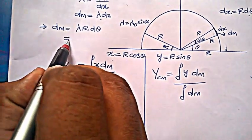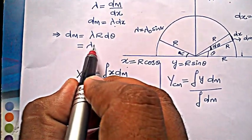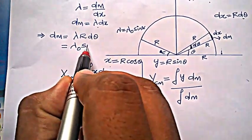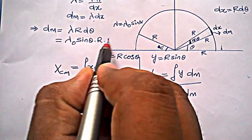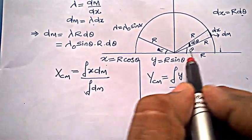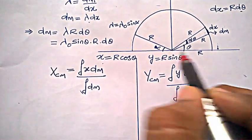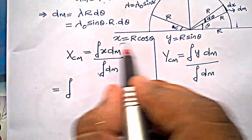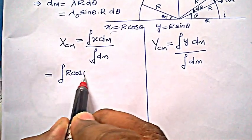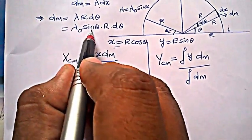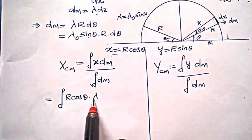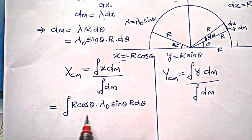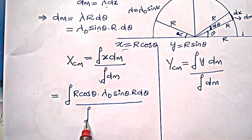Now, dm = λ₀ sin(θ) · r dθ, since I have chosen the angle θ. The limits of θ are from 0 to π. So the numerator of x_cm is ∫r cosθ · λ₀ sin(θ) · r dθ, and the denominator is ∫dm = ∫λ₀ sin(θ) · r dθ.